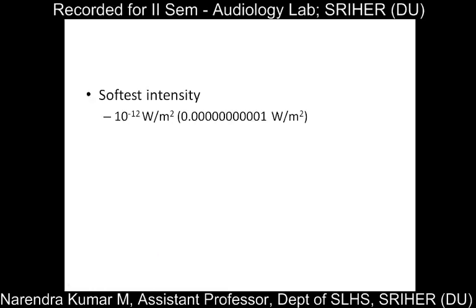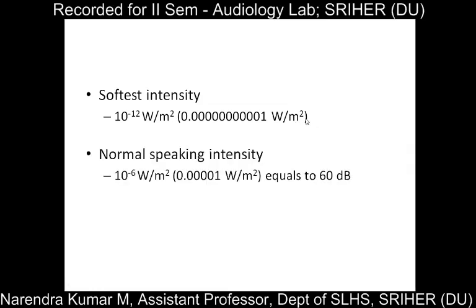The softest intensity at which a human can hear is 10 to the power minus 12 watt per meter square. That is the threshold of hearing in intensity. The normal conversation level is in the range of 10 to the power minus 6 watt per meter square, which equals 60 dB. So the normal speaking intensity is 10 to the power 6 — that is, 1 million times louder than the softest sound. Imagine what 120 dB would be.